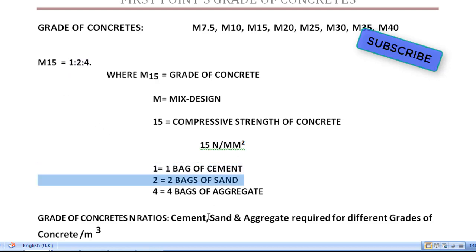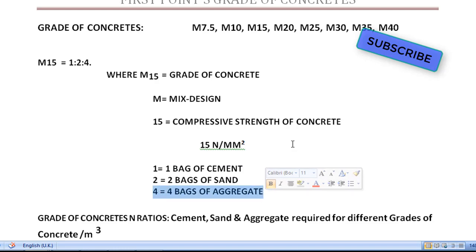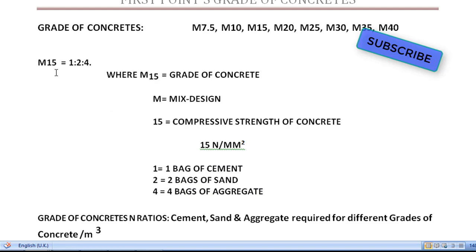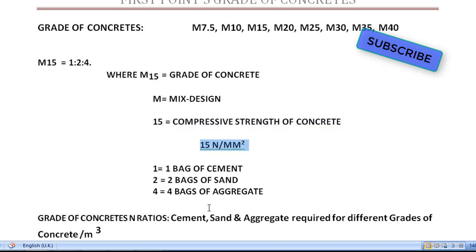1 bag of cement used, 2 bags of sand used, 4 bags of aggregate used. This aggregate is broken stone — the coarse aggregate. This is the complete explanation of M15 grade of concrete: ratio 1 is to 2 is to 4, compressive strength 15 Newton per mm², 1 bag of cement, 2 bags of sand, 4 bags of aggregate.